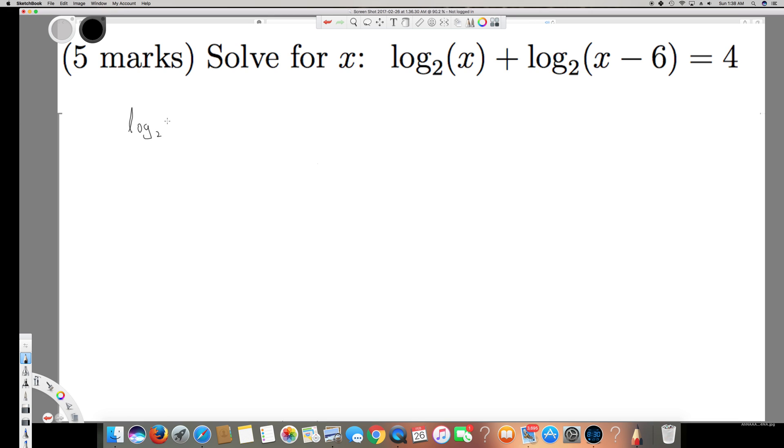What I can do is I take the log₂ common. Since I took the log₂ common, I have to multiply this x by (x - 6). It's going to be x² - 6x, right? This is going to be equal to 4.